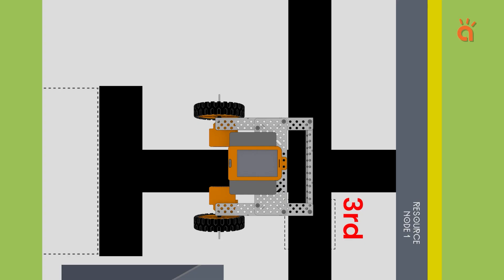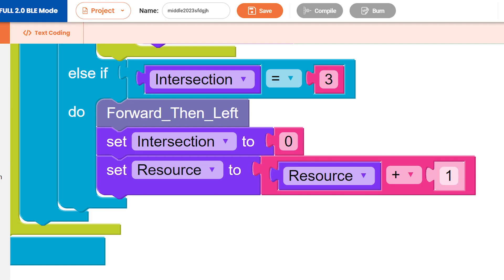After this, the robot will move towards the third intersection. On this intersection, we will use our function again. And once the robot has taken the turn, the black intersection counter will be set to 0 again. And the resource variable will be incremented by 1.